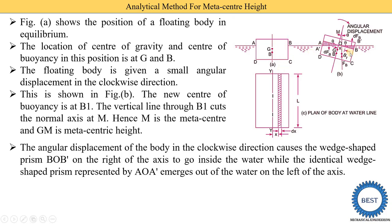The total submerged area is the same, but on the right side the area is more. The area that increased on the right side is B-O-B', and on the left side, the identical wedge-shaped prism represented by A-O-A' emerges out of the water. So the areas B-O-B' and A-O-A' are the same in magnitude, but on the right side the area goes inside the water and on the left side the area comes outside the water.